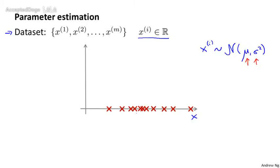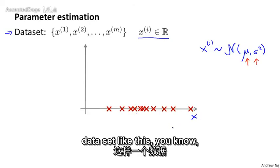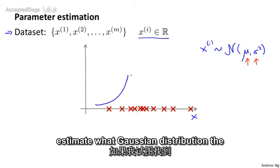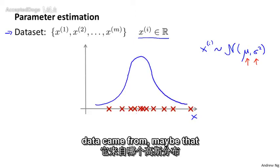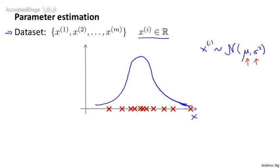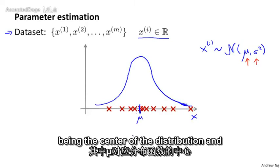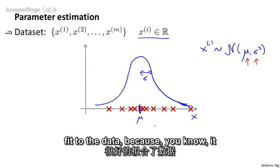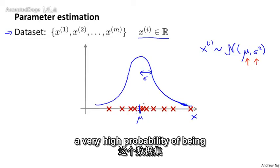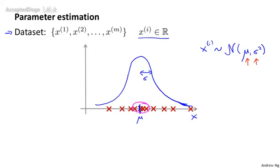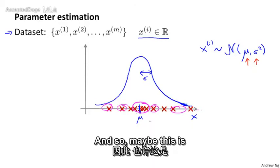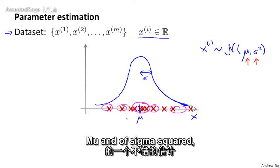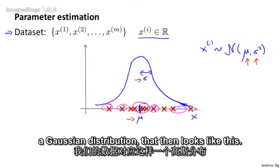But I don't know what the values of these parameters are. Given my dataset, I want to estimate the values of mu and sigma squared. Given a dataset like this, maybe the Gaussian distribution fits with mu being the center of the distribution and sigma — the standard deviation — controlling the width. It seems like a reasonable fit because the data has high probability of being in the central region, and low probability further out.